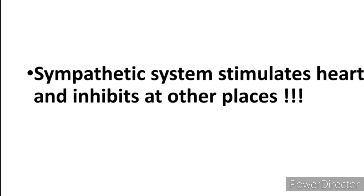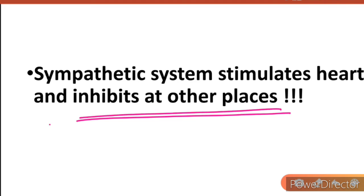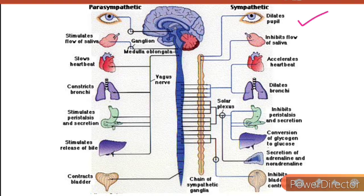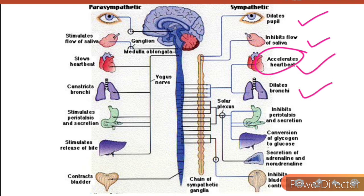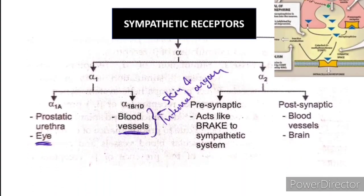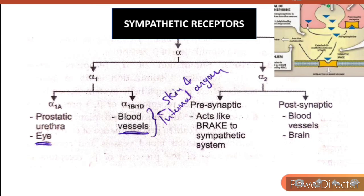The easiest mantra to remember the sympathetic system function: the sympathetic system stimulates the heart and inhibits at all other places. Its functions include dilation of the pupil (mydriasis), inhibition of saliva flow, acceleration of heartbeat, bronchodilation, inhibition of peristalsis and secretion, conversion of glycogen to glucose facilitating gluconeogenesis in the liver, secretion of adrenaline and noradrenaline, and inhibition of bladder contraction.